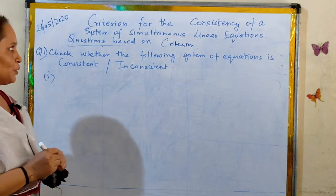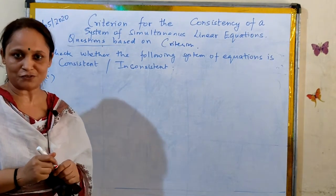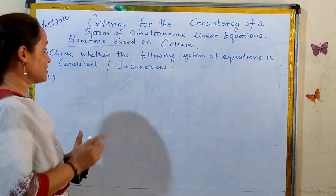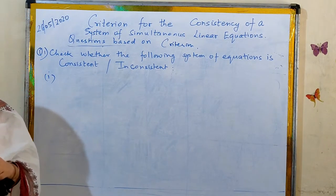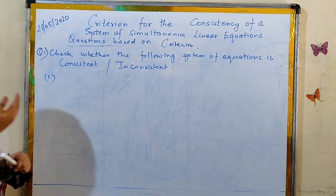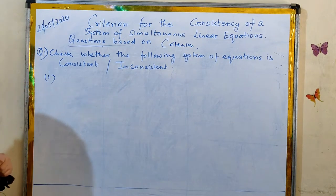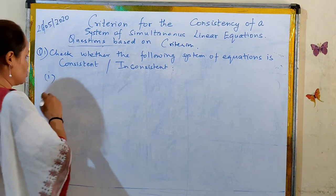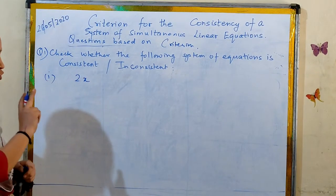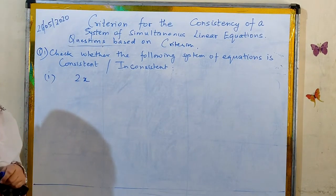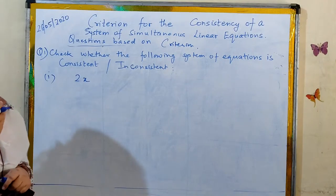In the last video, we discussed the criteria for the consistency of a system of linear equations. Now in this video, we are going to apply those conditions to check whether the following system of equations is consistent or inconsistent. We are taking 2 unknowns only, 2 variables only, so that we can easily understand the criteria.